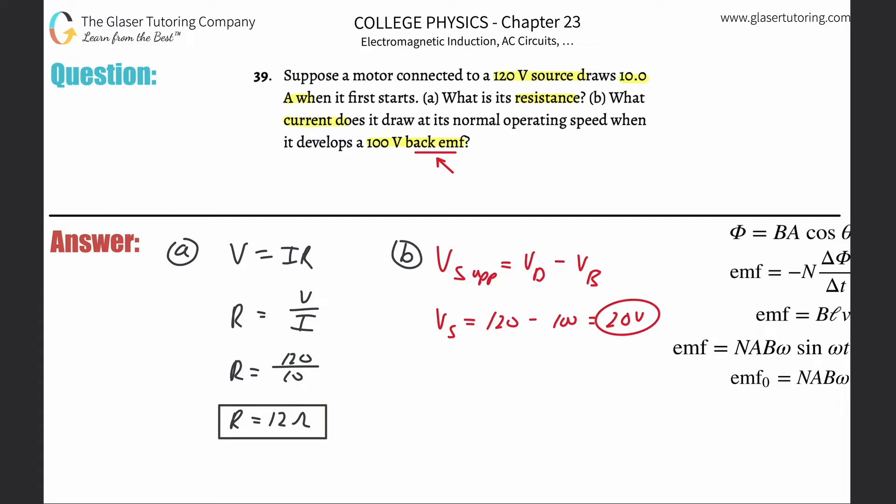Now we also will assume that the resistance inside of this particular motor is constant. And therefore to find now the current, I can again apply Ohm's law, solve this now for the current. So divide out the resistance from both sides.